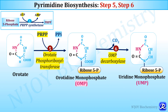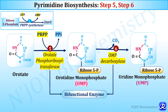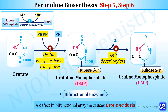In step 6, OMP decarboxylase catalyzes decarboxylation of OMP, releasing carbon dioxide and forming uridine monophosphate (UMP). Orotate phosphoribosyl transferase and OMP decarboxylase are domains of the same bifunctional enzyme. A defect in this enzyme leads to increased orotate concentration, which is excreted in urine — a condition called orotic aciduria.